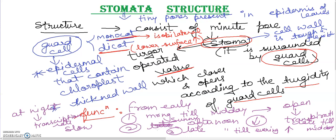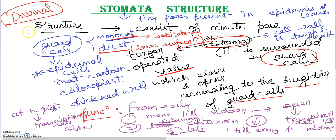Stomata show periodic opening during the day. That is why when the day and night changes are made, the term used is called diurnal. Stomata will show diurnal variation. It depends on heat and light intensity, water content, and humidity. There are many factors that affect the rate of transpiration.